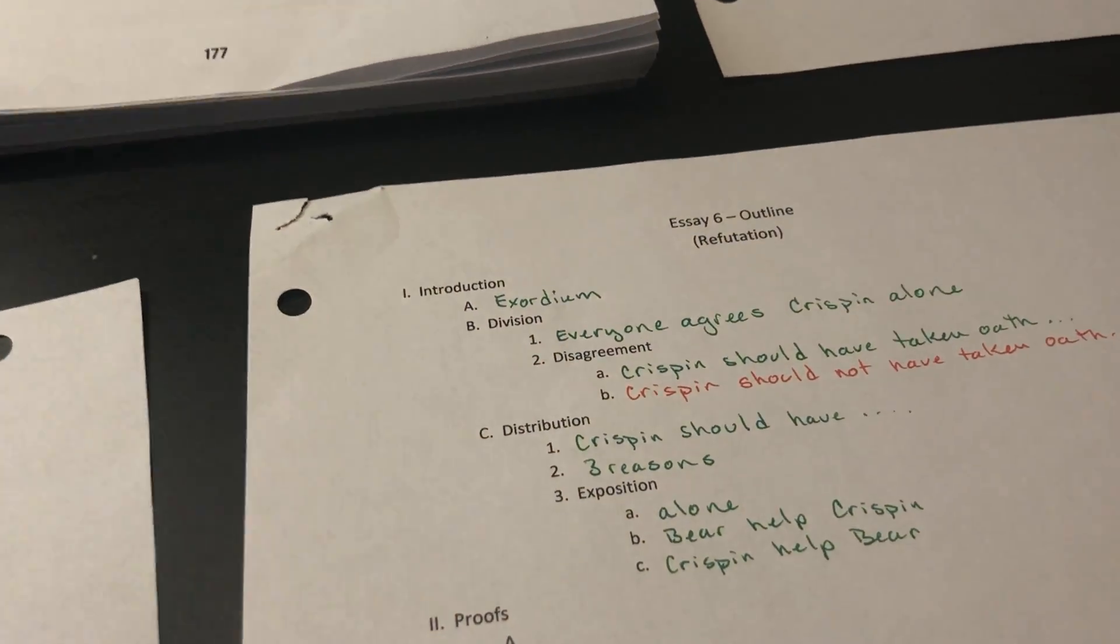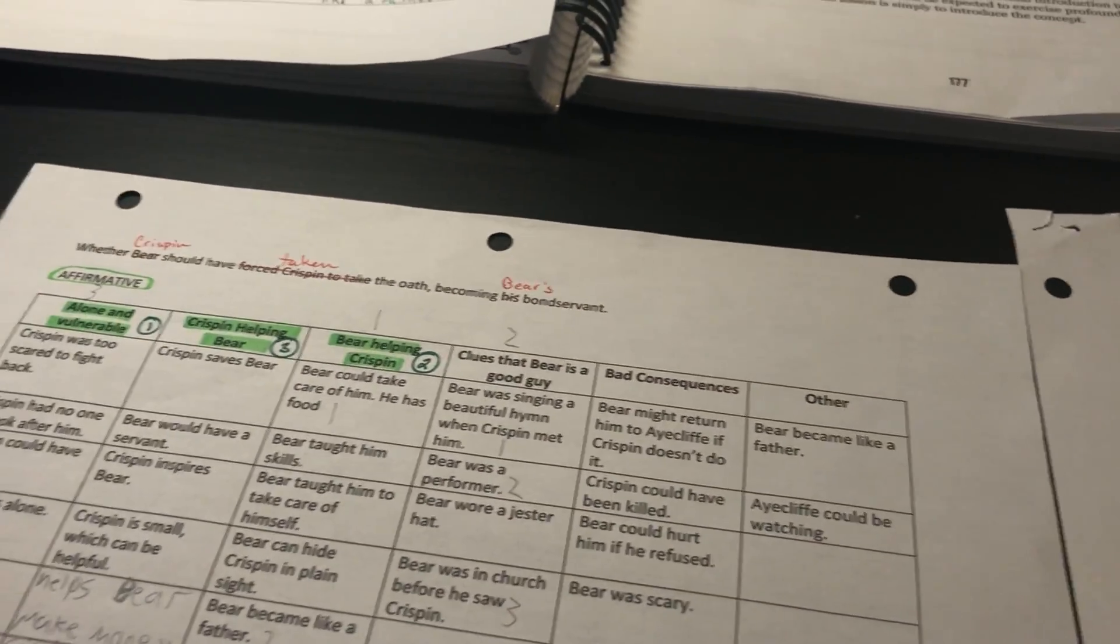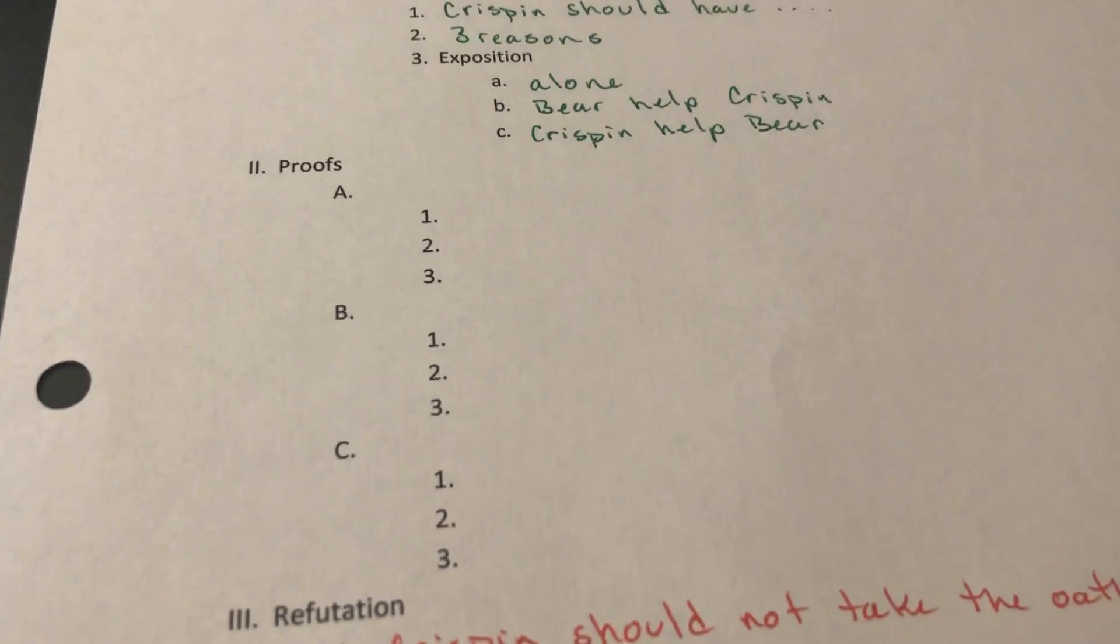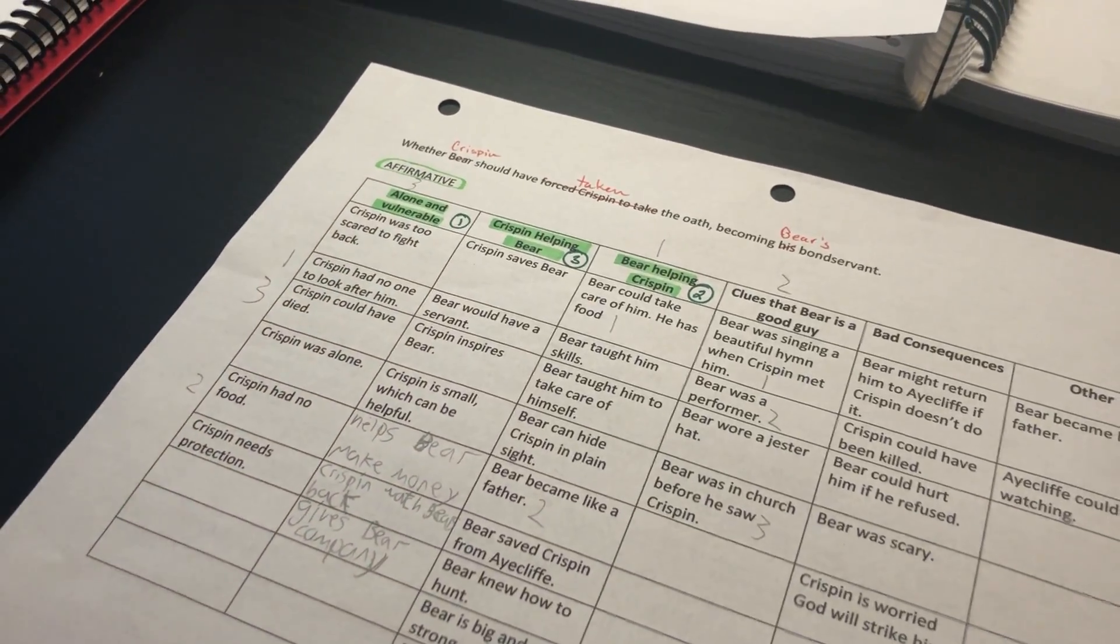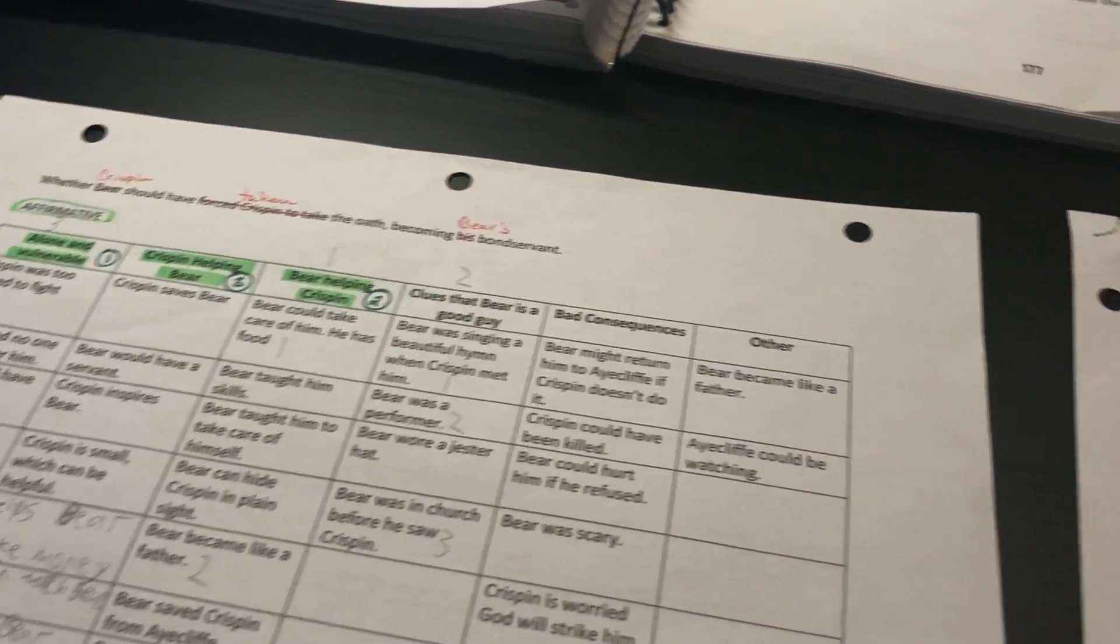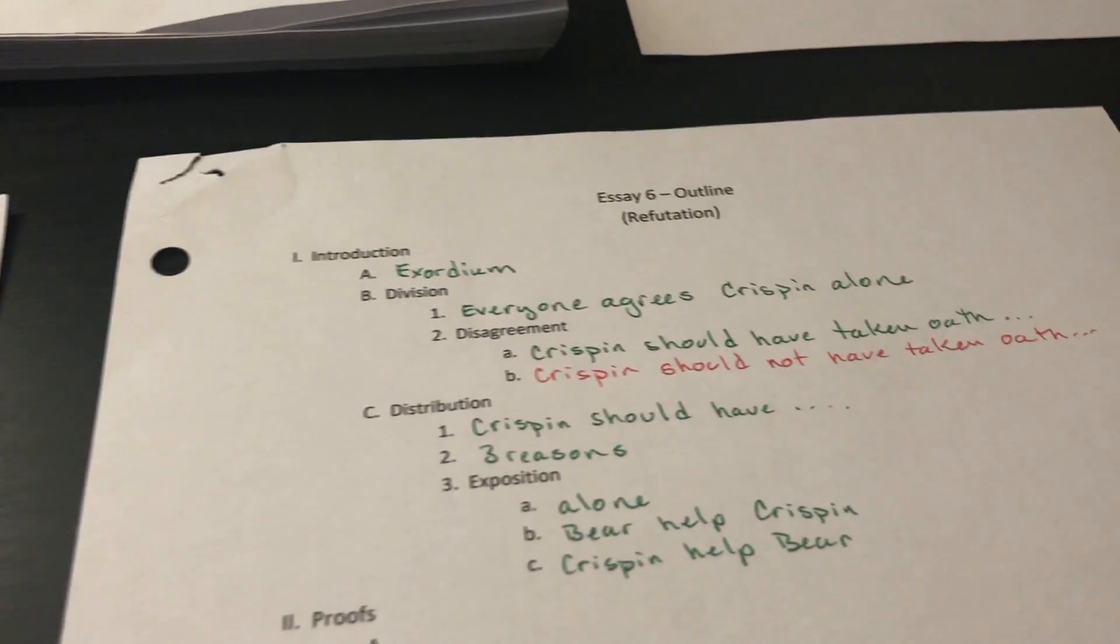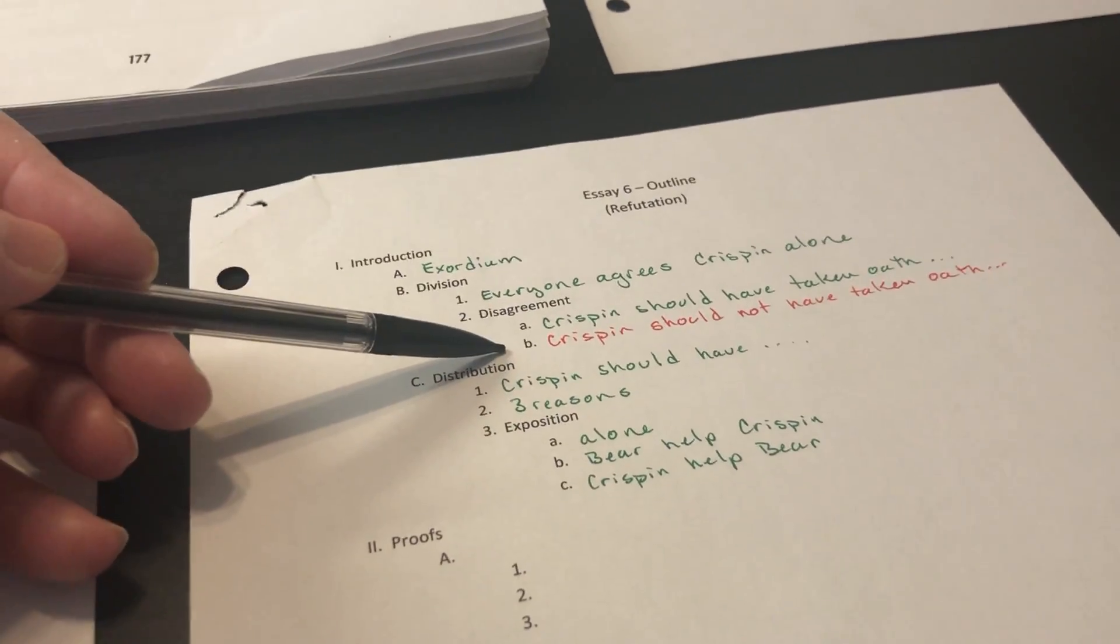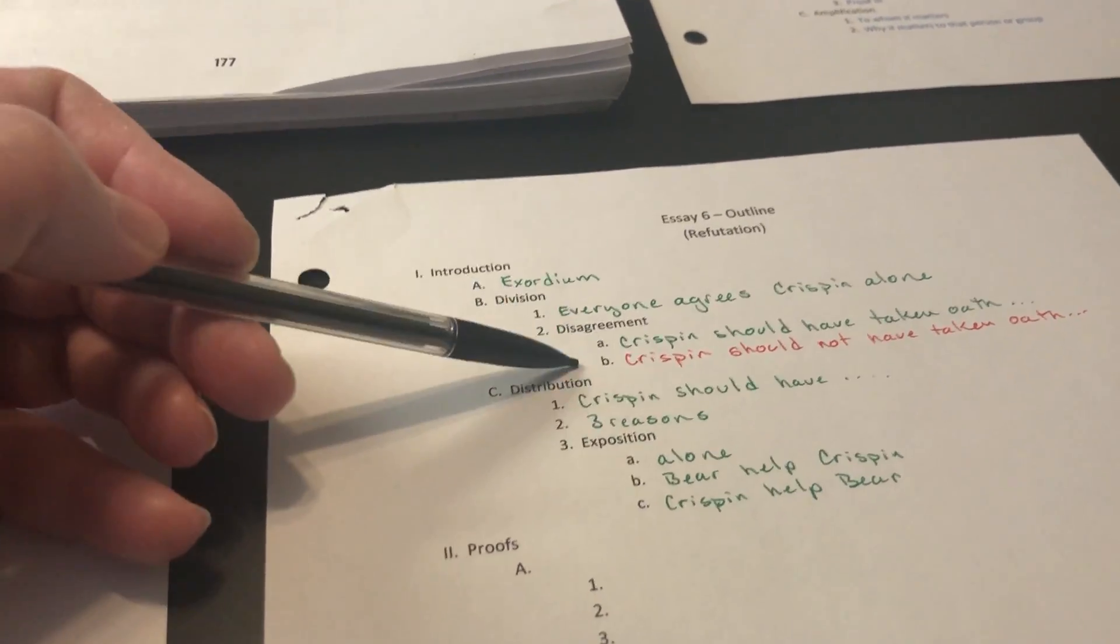We have our thesis and our counter thesis there. Our distribution is he should have taken the oath for three reasons. Our three main reasons that we chose, highlighted in green, we have listed as our three main sub-proofs. We did not take the time to fill this part out because I wanted to get on to the refutation. But right here is where we would take our three reasons and pick three reasons in each of those columns to help support our main proofs. So then we got into the idea that we really need to be able to answer that person who disagrees with us. So we need to understand their point of view and we need to be able to have an answer prepared for that disagreement. That's when we talked about our refutation.